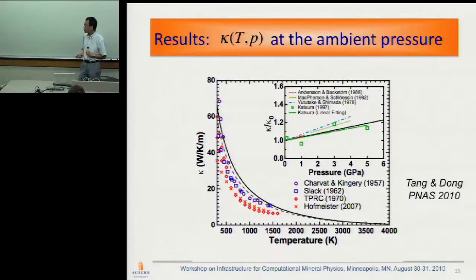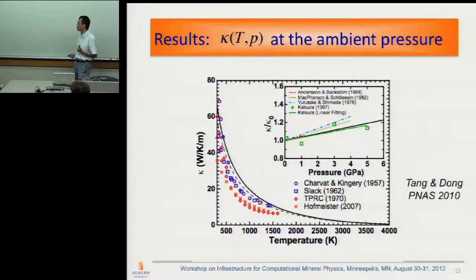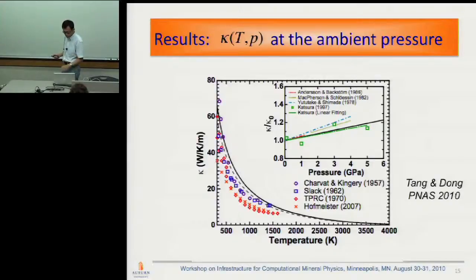Here is how we compare with experiment — only results at relatively low pressure are available. This is the comparison with data at ambient pressure, and this is a comparison with the pressure derivative up to about 5 gigapascal. We are in good agreement.